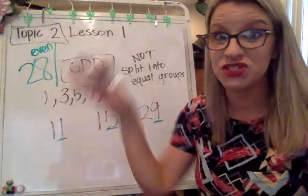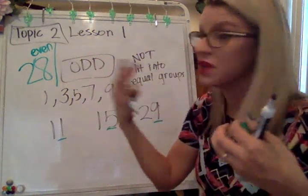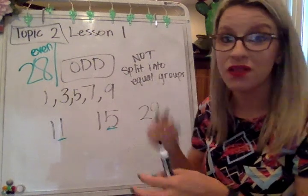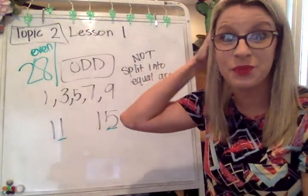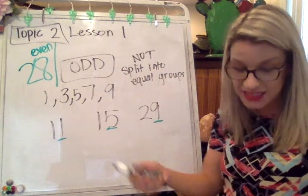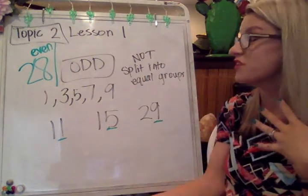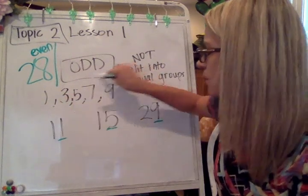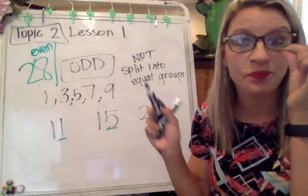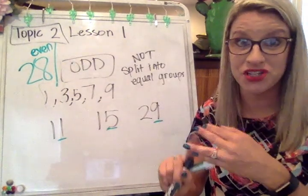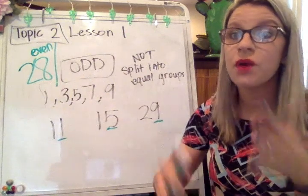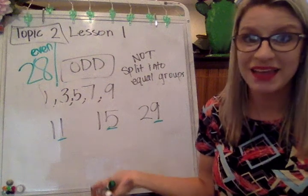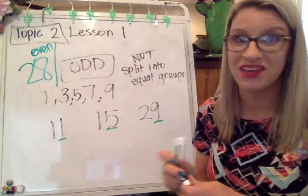If I was to draw twenty-eight into two equal groups, I would have fourteen in each of those groups. Your goal for today is to understand the difference between if a number is even or odd. If you want, you can jot down these numbers — one, three, five, seven, and nine — on your paper or scratch paper. Knowing and referencing that is going to help it get stuck in your head, so you can look at any number and decide if it's even or odd.